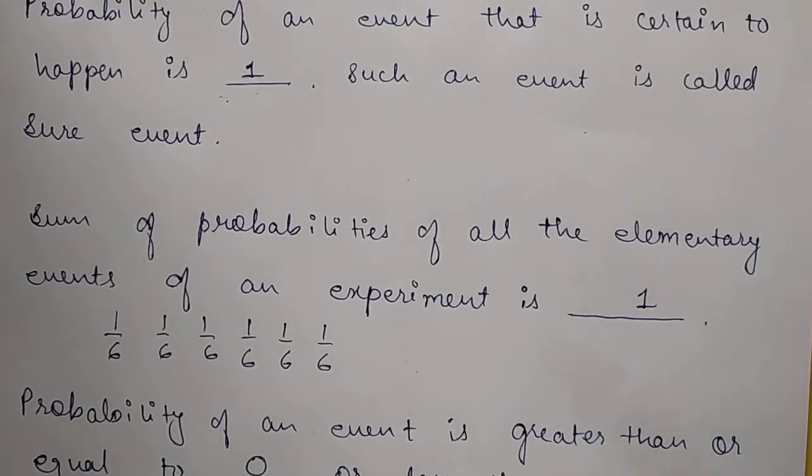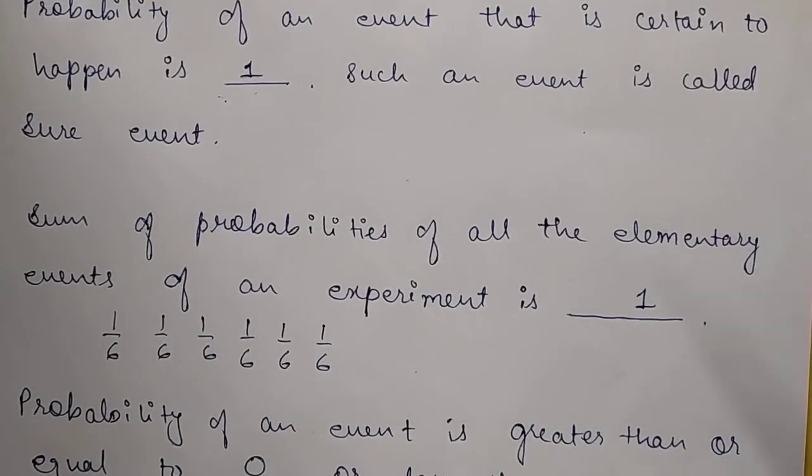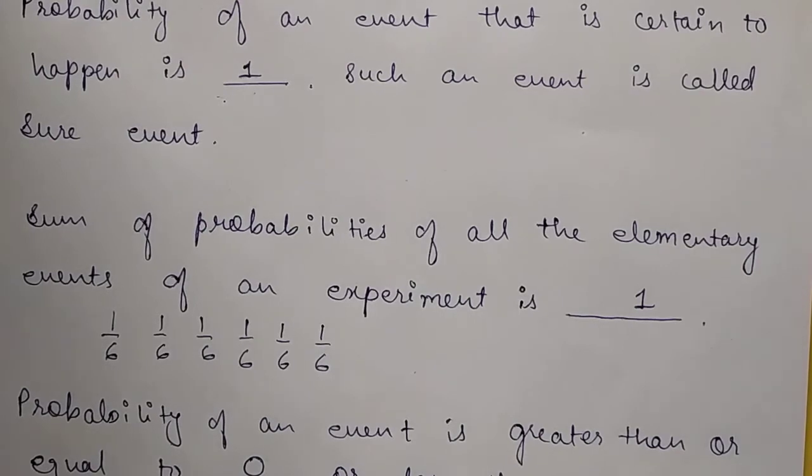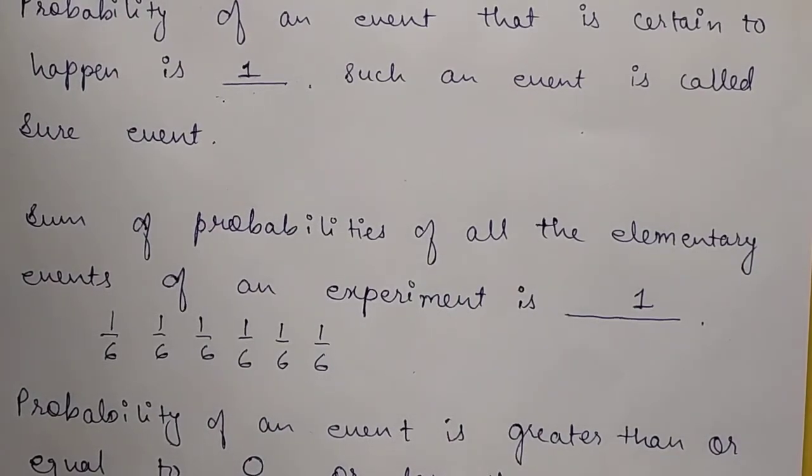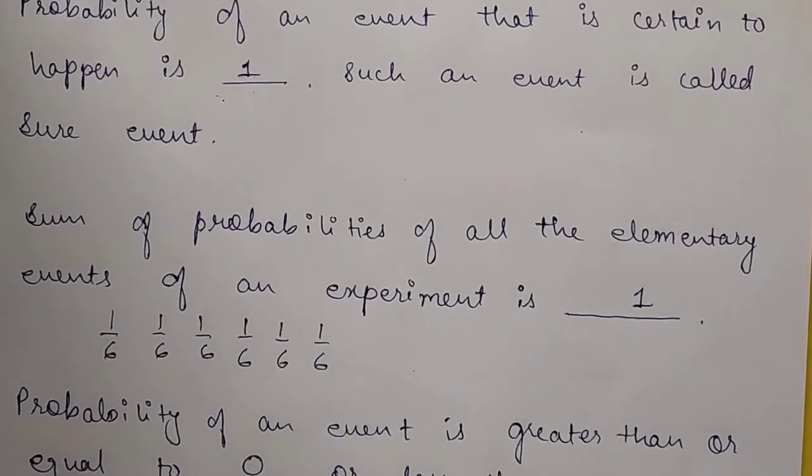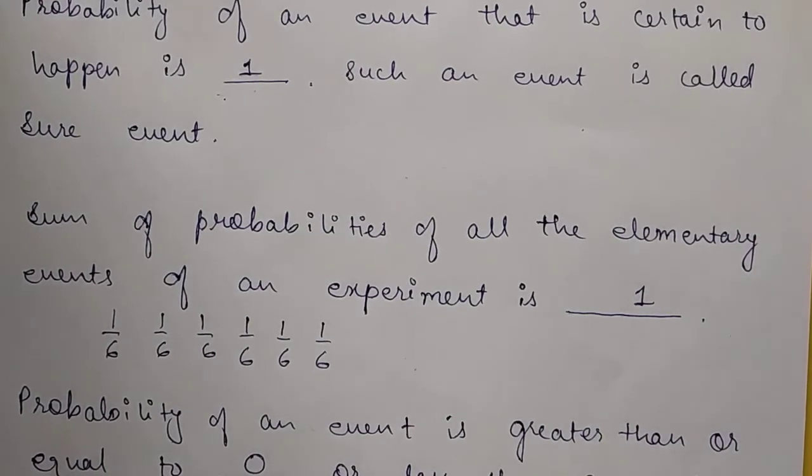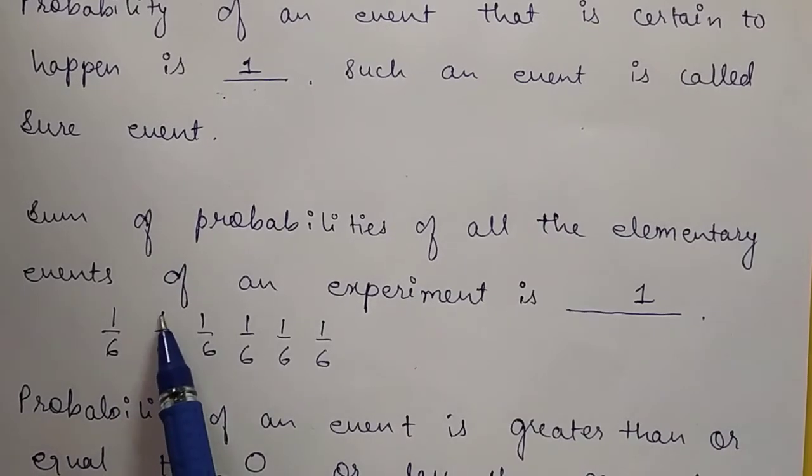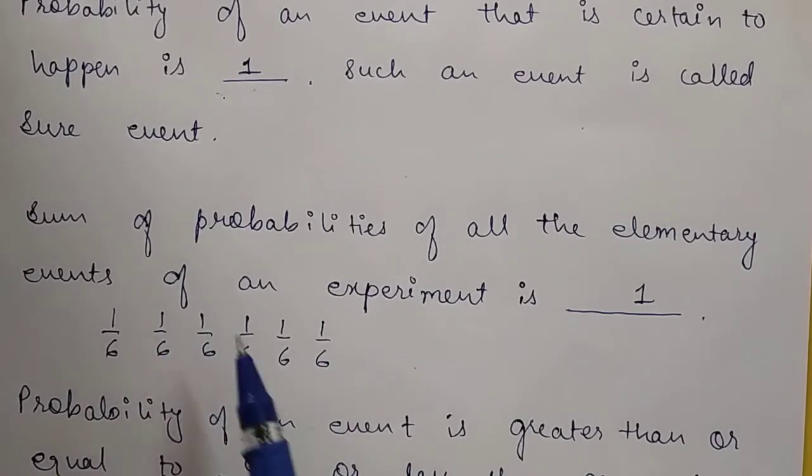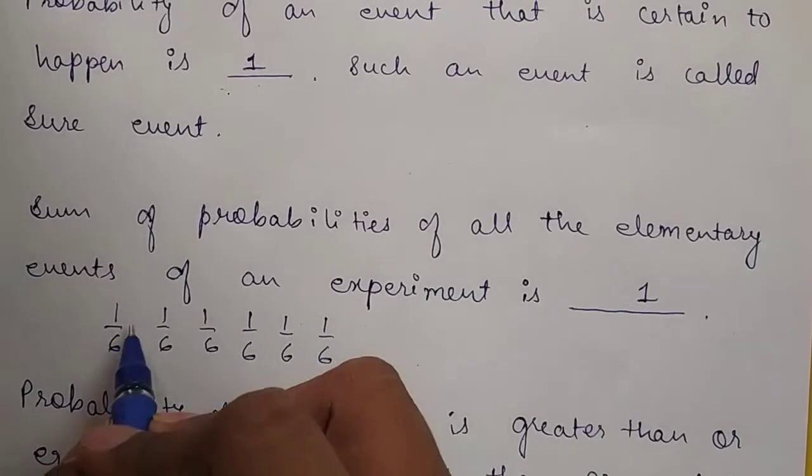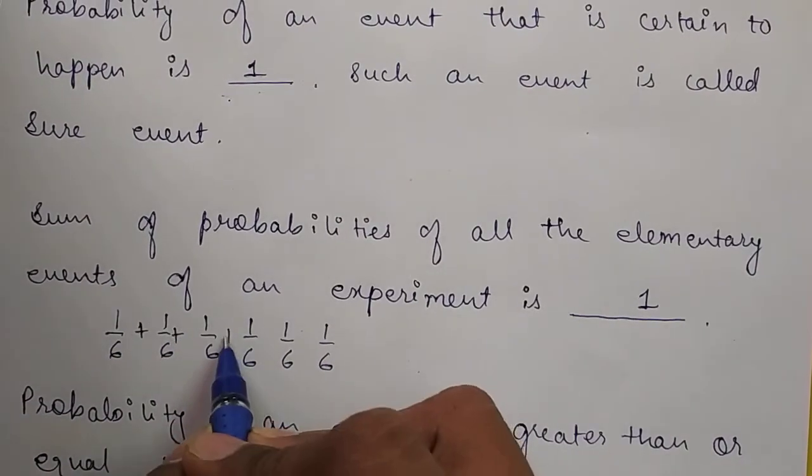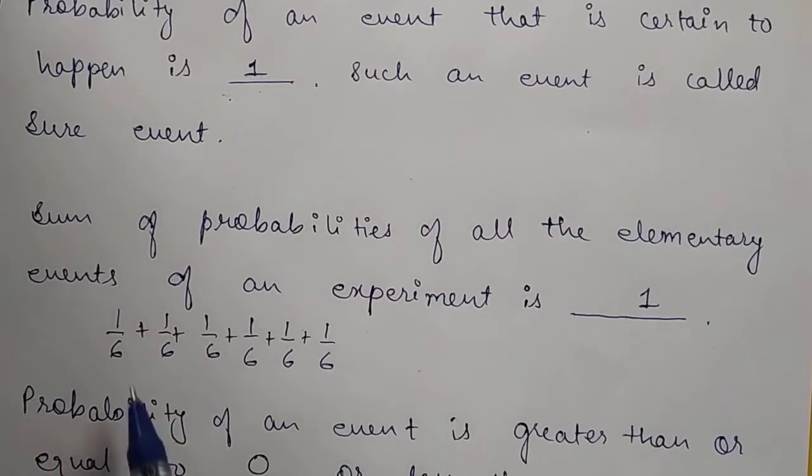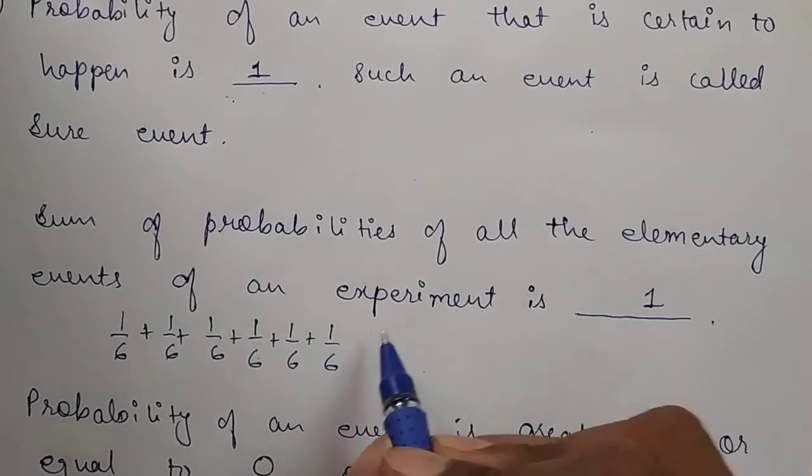We know the formula for probability: favorable outcome upon total number of outcomes. The probability of getting 1 is 1 by 6, because out of 6 outcomes, 1 appears only once on the dice. When it appears once, its chances are 1. Again, out of 6 outcomes, 2 appears once, 3 once, 4, 5, 6 all once. If I add all of these, these are called elementary events - single individual events.